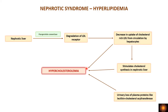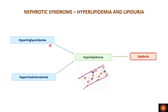Another reason for hypercholesterolemia is urinary loss of lecithin-cholesterol acyltransferase (LCAT), which converts cholesterol into cholesterol esters so it can be utilized in lipoproteins. When LCAT is lost in urine, cholesterol cannot be properly utilized, contributing further to hypercholesterolemia. Hypertriglyceridemia and hypercholesterolemia together cause hyperlipidemia, and subsequently lipids are also lost in the urine, causing lipiduria.